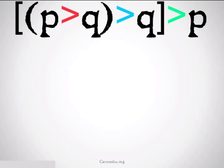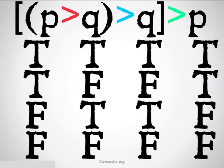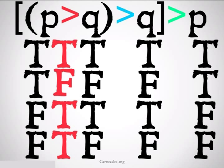Next up, we have P implies Q implies Q, all implies P. First thing we're going to do, as before, is list out the truth tables under each of those variables, P and Q. We have four possible worlds because we have two variables. Then we're going to start with the furthest inside the parentheses we can get — that's going to be the red implication between P and Q. We're just going to use the truth table directly next to that implication. We remember the only time an implication is false is going to be when the first is true and the second is false.